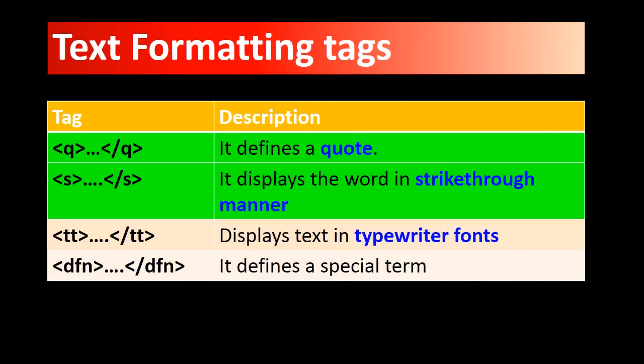The next tag is q tag — q and slash q. Whatever sentence you write between q and slash q, double quotes will be added to that sentence on both sides. The next formatting tag is s and slash s — it displays the word in strikethrough manner. For example, if you write something in your notebook and then find it was a mistake, since you wrote it with a pen you can't press backspace, so you cross it out with the pen. Same way, whatever word or sentence you want to cross out, use the s tag before and slash s after it.